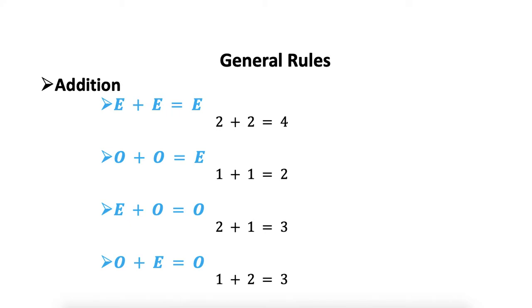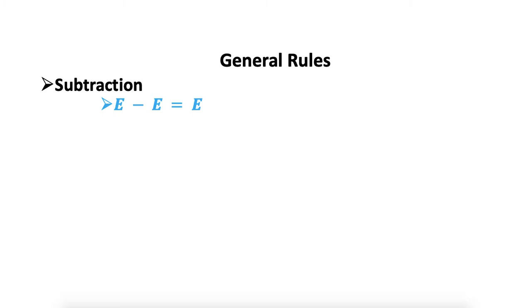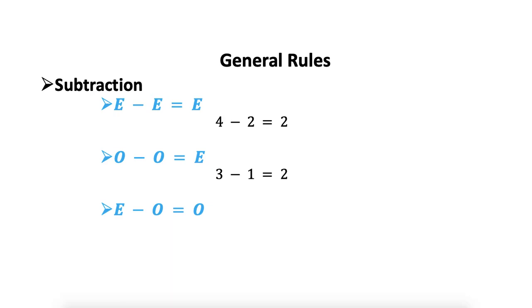So we can summarize: we get an even result when we have two integers of the same nature — either both even or both odd. If one is even and the other is odd, the result is always odd. The same properties hold for subtraction: two evens give an even result (e.g., 4 minus 2 equals 2), two odds also give an even result (e.g., 3 minus 1 equals 2), and one even and one odd give an odd result (e.g., 2 minus 1 equals 1, or 3 minus 2 equals 1).